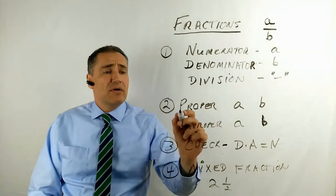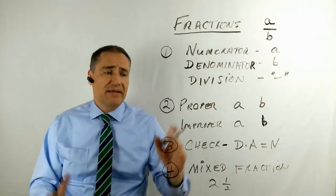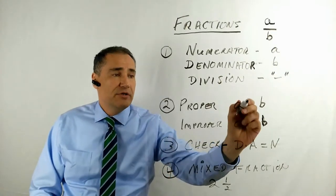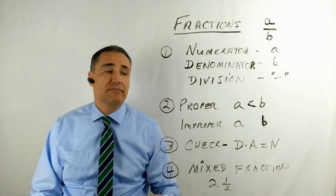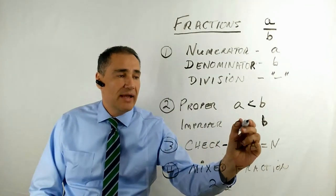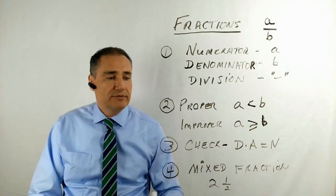So there are two different types of what we call proper and improper fractions. When A, the numerator, is less than B, that's called a proper fraction. That means the number is less than one. And an improper fraction is when A is greater than or equal to B. And you'll see that very often.